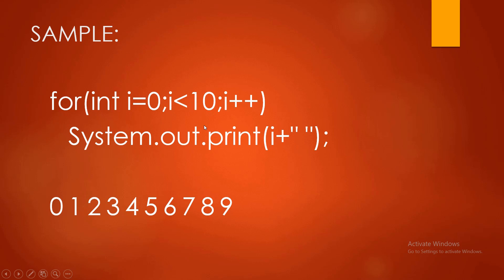Why is the number 10 not included? Because our condition has no equal sign — it is strictly less than 10, so it only goes up to 9. For example: is 0 less than 10? Yes — print 0, then i++ makes it 1. Is 1 less than 10? Yes — print 1, and so on until 9. When i becomes 10, the condition '10 < 10' is false, so the loop stops. The output is 0 to 9 on one horizontal line because we used print; if we used println, it would be vertical.